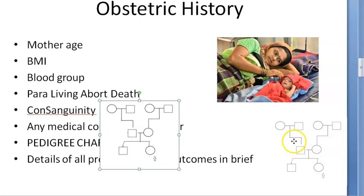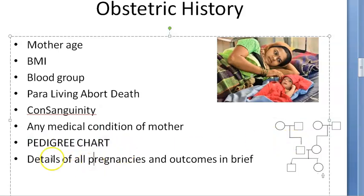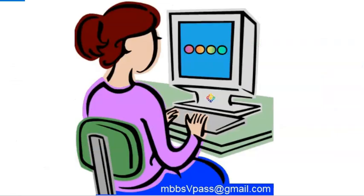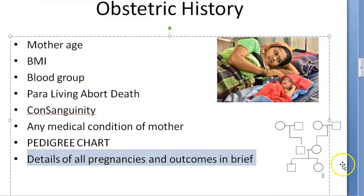Then pedigree chart you have to draw of the child. Something like this you can draw to know that this is the second child of hers. This grandparents, parents, everything has been indicated. So this is the pedigree chart you will draw and each of the pregnancies so far you will have to discuss in brief.